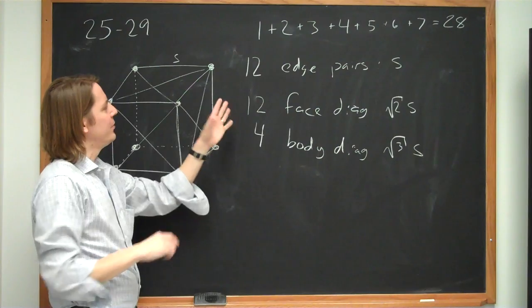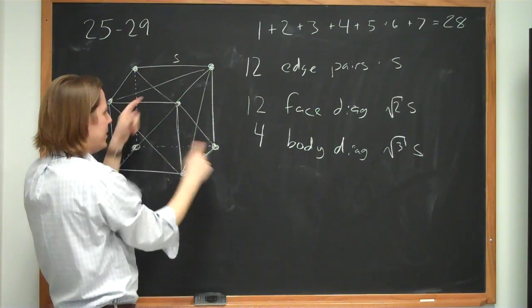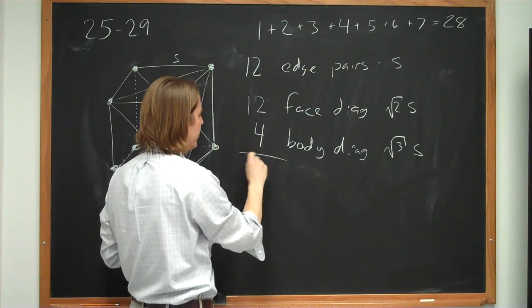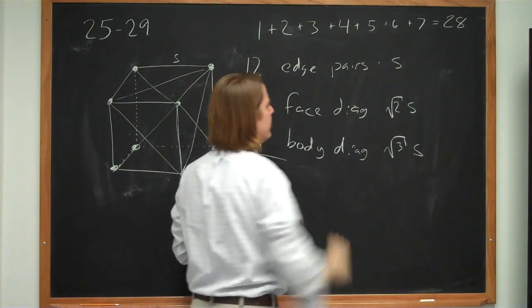So you want to do it this way because then you don't have to keep up with them. If you're trying to keep up with them one at a time, all 28, you'll lose track. And you can add up and make sure you did it right. 12 plus 12 is 24 plus 4 is 28. So this does capture them all.